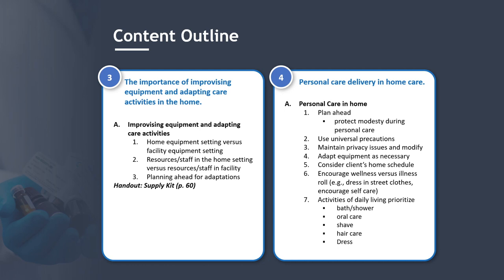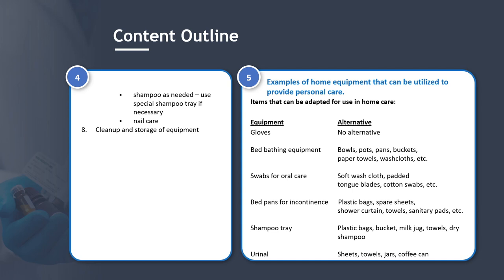Section 4: Personal Care Delivery in Home Care. Key principles include: plan ahead; protect modesty during personal care; use universal precautions; maintain privacy and modify issues as needed; adapt equipment as necessary; consider the client's home schedule; encourage wellness versus illness role; dress in street clothes; encourage self-care and activities of daily living. Priorities include bath and shower, oral care, shave, hair care, and dressing.